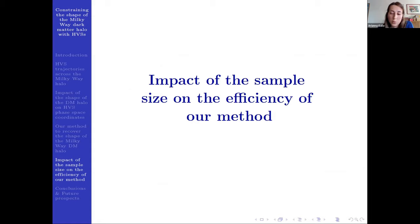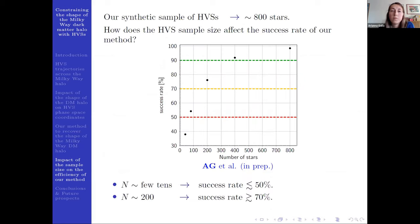Of course, we have obtained these results for our synthetic sample of hypervelocity stars that includes around 800 stars. But how does the HVS sample size affect the success rate of our method? And to answer this question, we can look at this plot. And nowadays, we have observed around 20 hypervelocity stars. And we can see that for few tens of stars in our sample, the success rate goes under 50%. However, for 200 stars, we can reach a success rate that is greater than 70%.